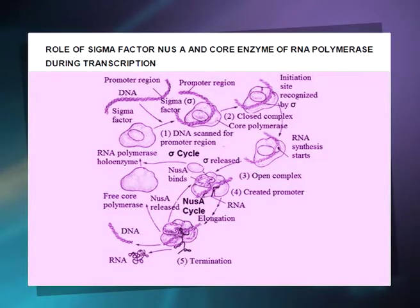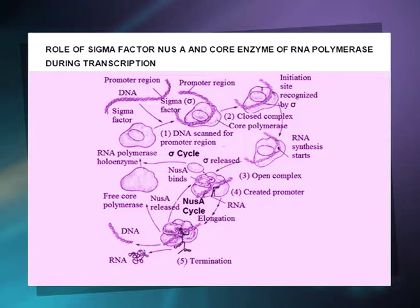The sigma factor helps in recognition of start signals on DNA and directs RNA polymerase for the selection of initiation sites. In the absence of sigma, the core enzyme initiates RNA synthesis in a random manner. Once RNA synthesis is initiated, sigma dissociates after RNA is 8 to 9 base pairs long, and then the core enzyme brings about elongation of mRNA. The dissociated sigma factor may again combine with the core enzyme to form the RNA polymerase holoenzyme.